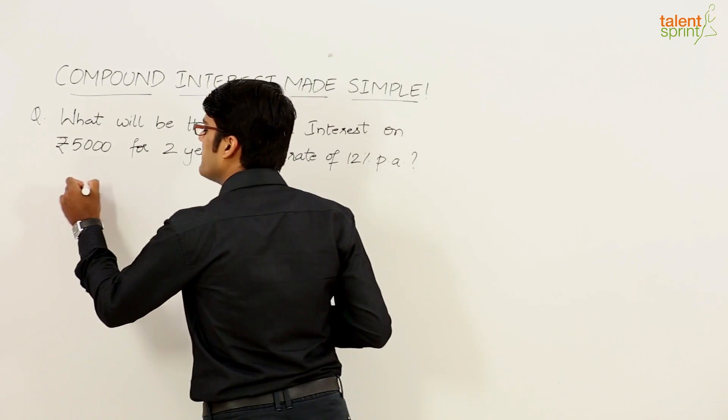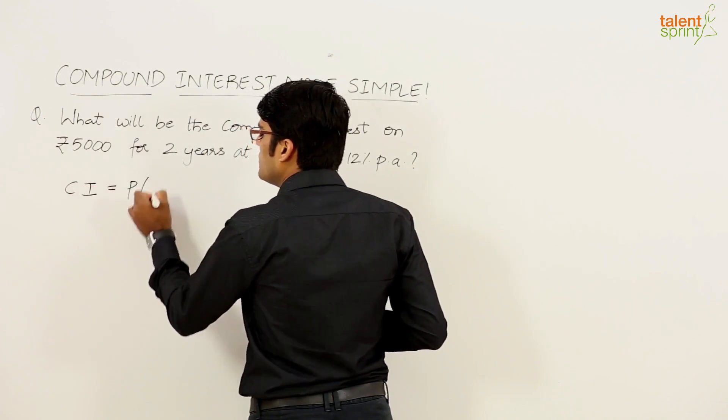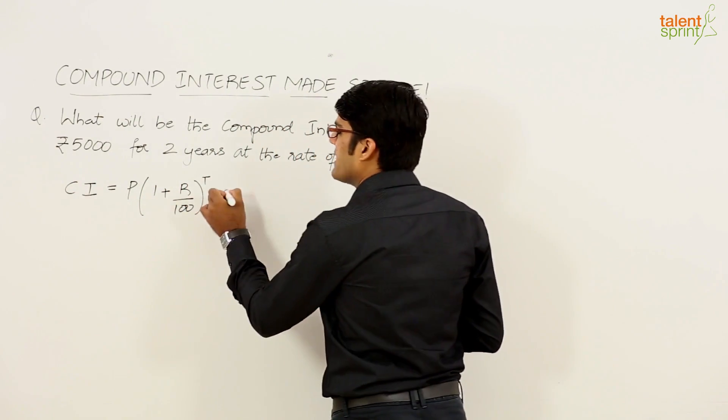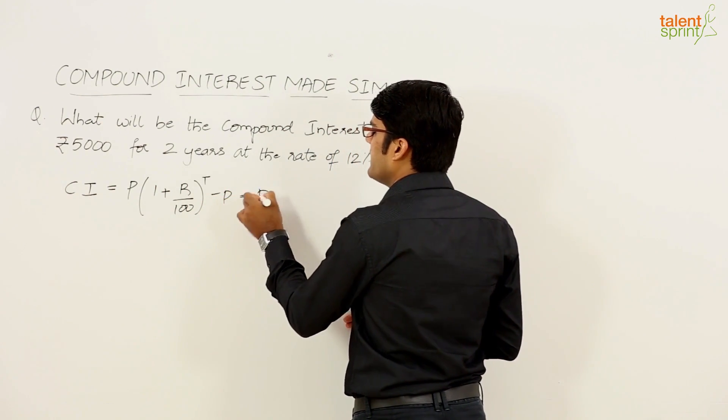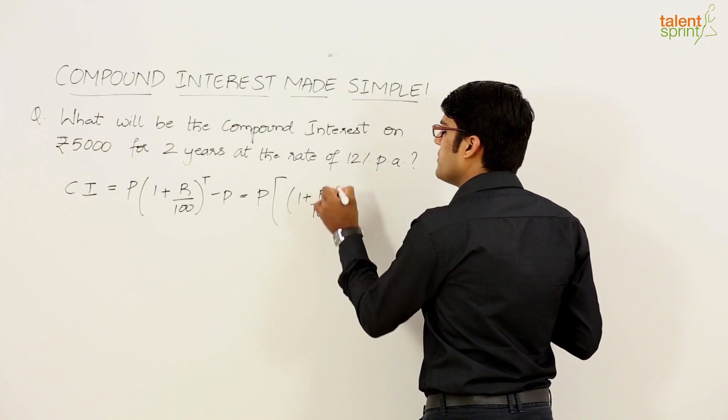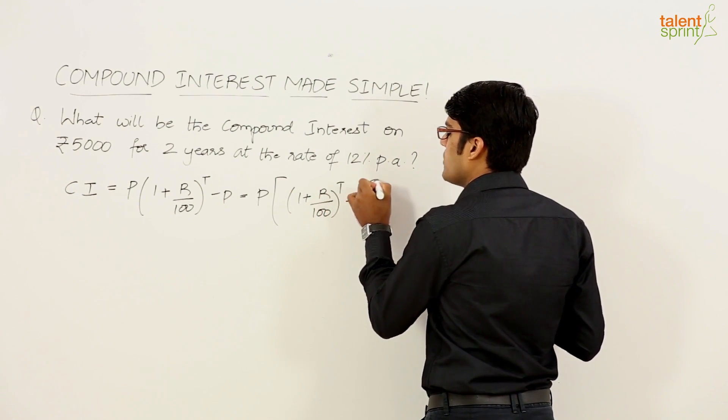What is the formula? Compound interest is equal to P into (1 plus R upon 100) whole raised to the power of T minus P, or if you take P common we get P[(1 plus R by 100) to the power of T minus 1].